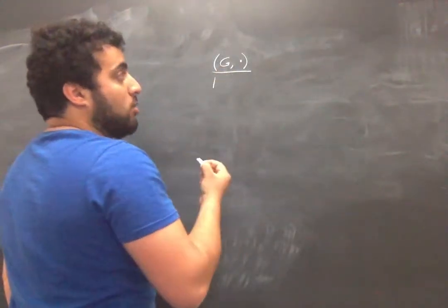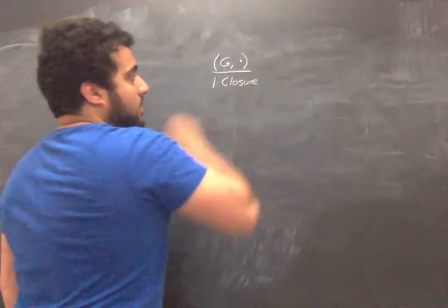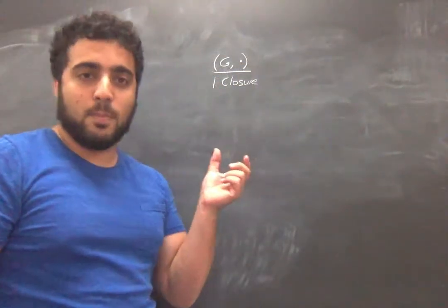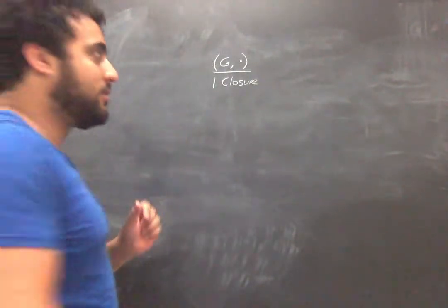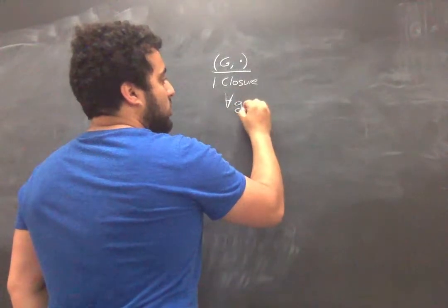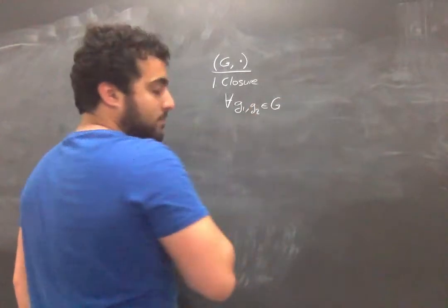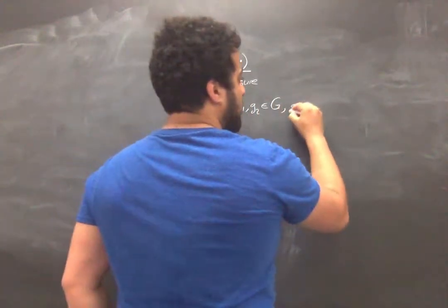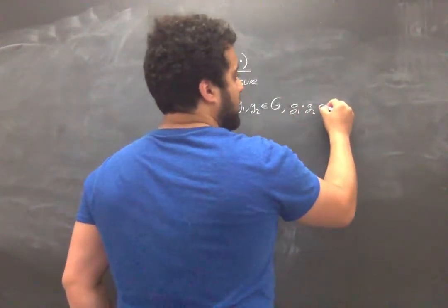The first one is closure. Closure says that if you take any two elements of this group and combine them with its binary operation, you get another element of the group. Formally: for all elements G1 and G2 in our set G, the product G1 times G2 is also in our set G.